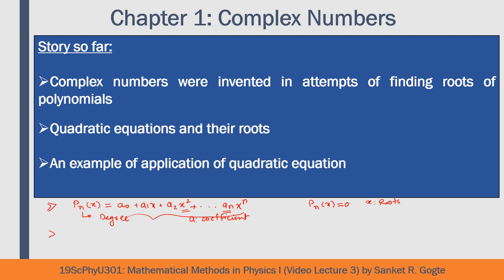Then we discussed the quadratic equation. The reason is that quadratic equations are polynomials of second degree and are the simplest polynomials that can lead to complex roots. A quadratic polynomial is generally written as ax squared plus bx plus c, and finding its roots means equating this to zero and finding the values of x that satisfy the equation. The roots are given by the formula: x equals minus b plus or minus the square root of b squared minus 4ac, divided by 2a.